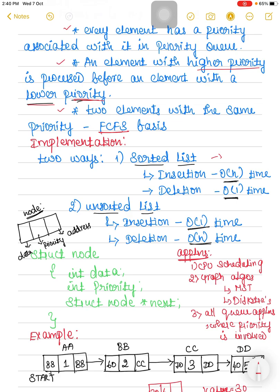In the sorted list, you have to find the node with lesser priority and insert the new node after it, so insertion takes O(n) time. Deletion takes only O(1) time because the highest priority element is already at the front — you can directly delete from the beginning. For an unsorted list, insertion takes O(1) time since you can insert at any end, but deletion takes O(n) time because you must search for the highest priority element.